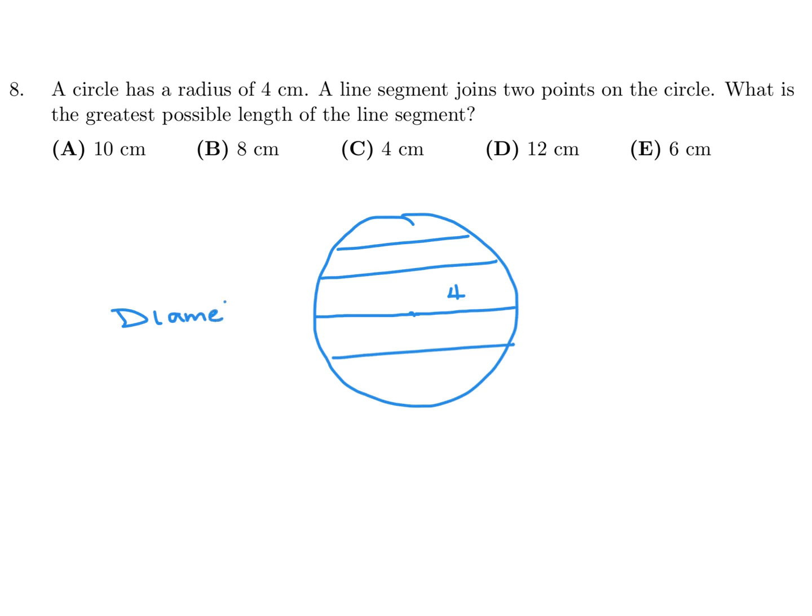The diameter would be the line that has the greatest possible length. And the diameter, as we all know, is equal to two times the radius. And the radius, in this case, is 4. So therefore, two times the radius would be 8. And that's the greatest line you can draw. And therefore, number 8 would be B, 8 cm.